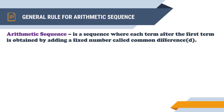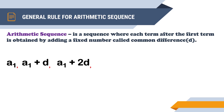Using the definition, we can build a general arithmetic sequence. The first term is a₁. By definition, we get the next term by adding the common difference d, giving a₁ + d. Adding another d gives a₁ + 2d for the third term. Adding d again gives a₁ + 3d for the fourth term.